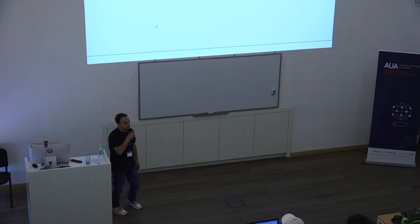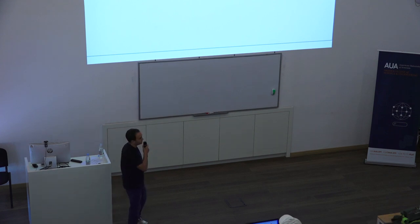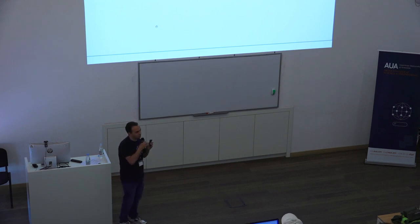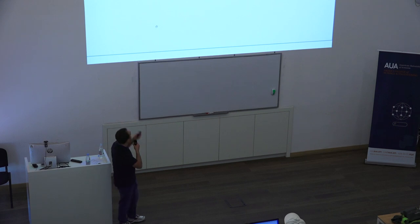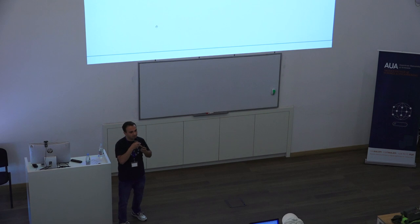What is 3D semantic segmentation? In 3D semantic segmentation we have a 3D scene and we want to do semantic segmentation of each instance. This is an example of an indoor dataset where we have a table and chairs, and each chair is colored differently because it is a different instance of the same class.